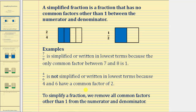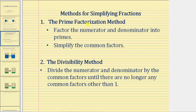So in general, to simplify a fraction, we remove all common factors other than one from the numerator and denominator. We'll be discussing two methods for simplifying fractions in this lesson. The first method is the prime factorization method: step one, we factor the numerator and denominator into prime factors; step two, we simplify out the common factors.